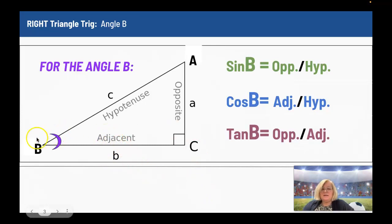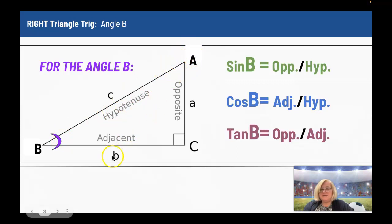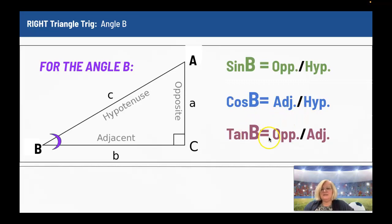For angle B, the opposite side is wherever you're looking at it. If B was up here, the opposite side would be little b. The same thing holds: sine is the opposite side divided by the hypotenuse, cosine is the adjacent side divided by the hypotenuse, and tangent is the opposite side divided by the adjacent side. Sine, cosine, and tangent are actually trig functions — they take the ratio.